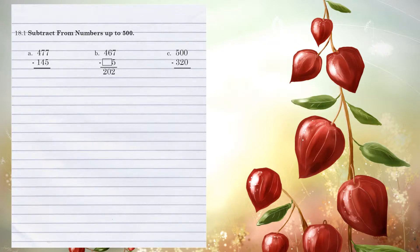If we start off in the 1's column, 7 minus 5 equals 2. In the 10's column, 7 minus 4 equals 3. And in the 100's column, 4 minus 1 equals 3, for a final answer of 332.